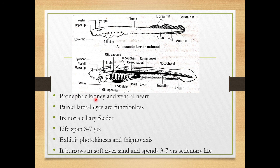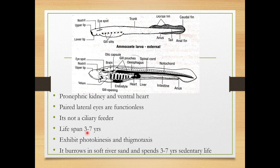There is a pronephric kidney, which is the primitive kidney, and there is presence of a ventral heart. There are paired lateral eyes which are actually rudimentary or functionless. It is not a ciliary feeder but a filter feeder; the water current is created not by ciliary action but by muscular action.